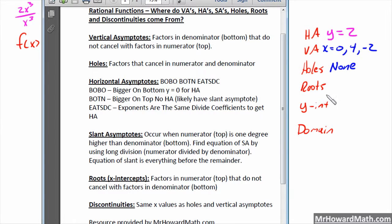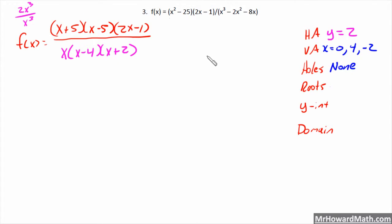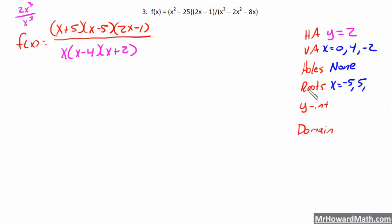All the numerator factors didn't cancel, so each one gives us a root. We have a root of x = -5 from the (x+5) factor, a root of x = 5 from the (x-5) factor, and from (2x-1) we set it equal to 0, add 1 and divide by 2, giving us x = 1/2.